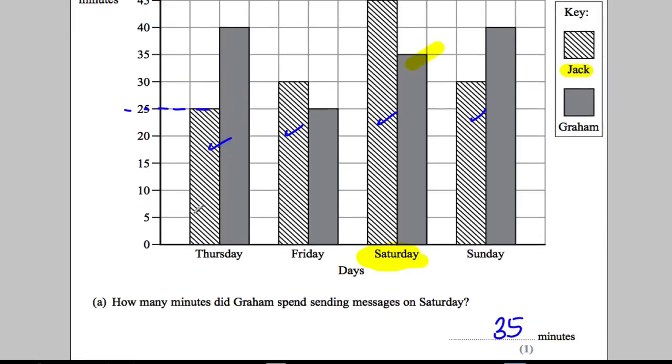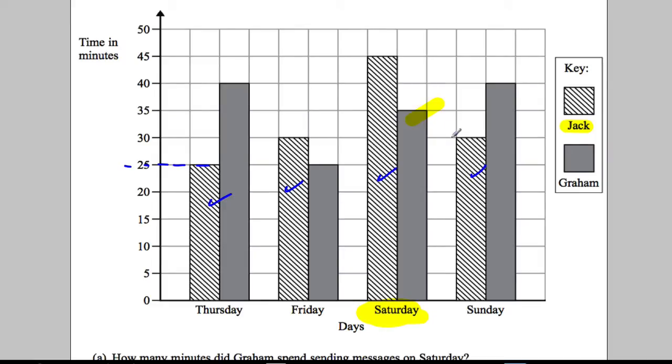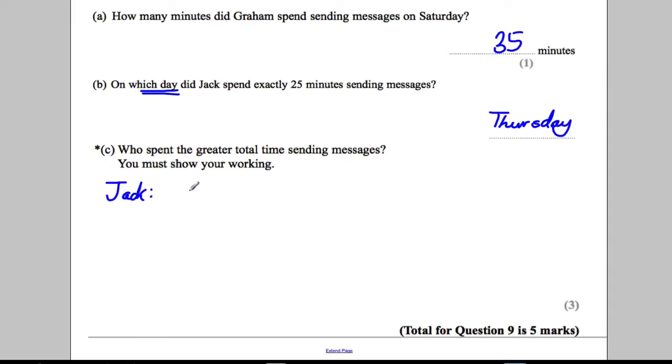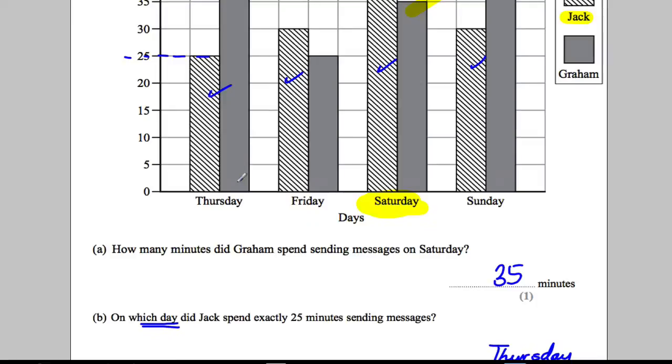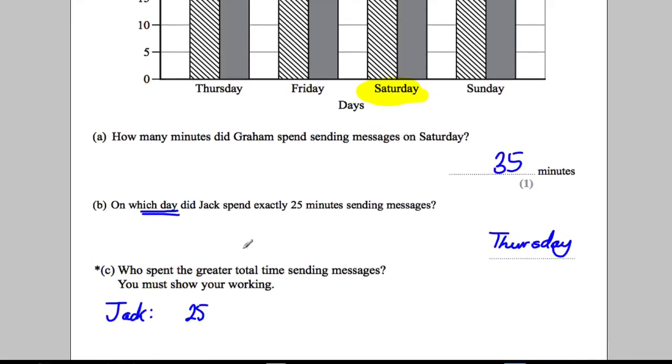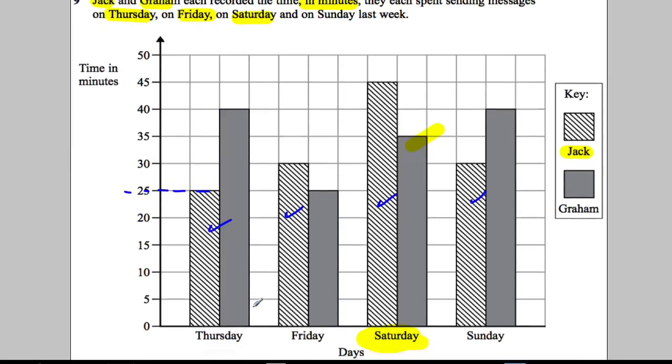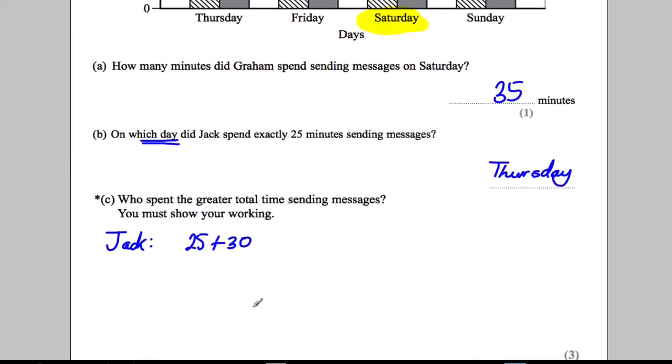Remember, Jack is this one here. So we have 25 + 30 + 45 + 30. So we've just got to add these now. You can add in any order. Let's just be clever about this.